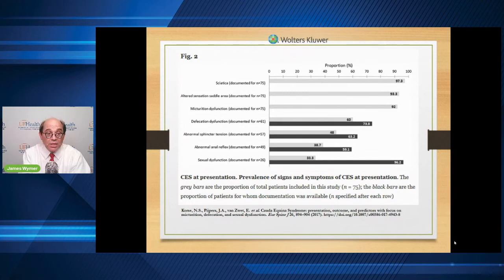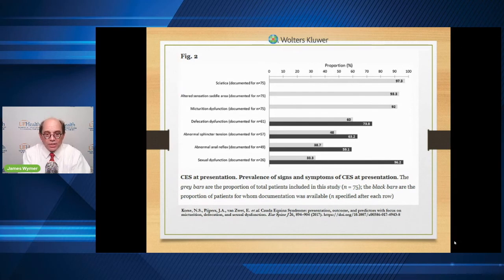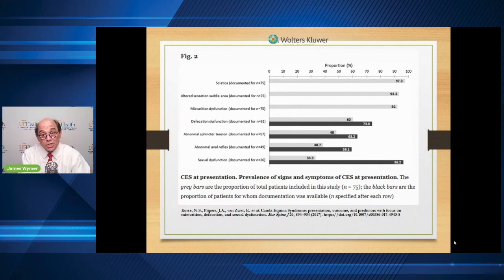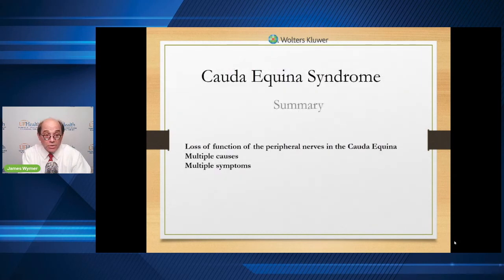They found defecation and micturition problems — bowel and bladder dysfunction — sphincter tone reduced and documented, and sexual dysfunction. This backs up many of the things seen in people who present with cauda equina. These are all lower motor nerve, lower area signs. In summary: what is cauda equina? It is the loss of function of peripheral nerves with multiple causes and multiple symptoms.